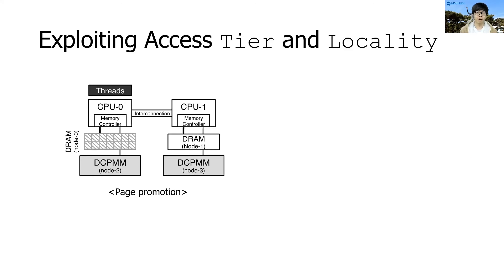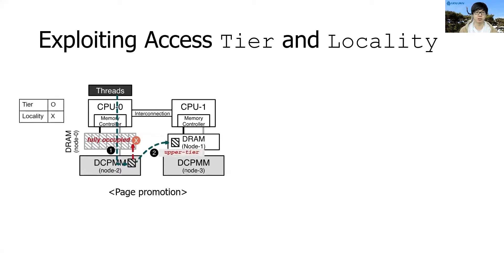From now on, I am going to present our approach to maximize performance of multi-tiered memory systems. Let's first look at how we exploit the access tier and locality of the tiered memory systems. We assume that the threads running on the CPU zero socket access the page on the local lower-tier memory and the local upper-tier memory is fully occupied. In this case, the operating system considers alternative places in the multi-tiered memory system to move the page. Although we fail to promote the page to the local DRAM, we can promote it to the remote DRAM, which is faster than the local DCPMM.